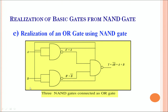When A is 1 and B is 0, we get a 0 and a 1 from the first two NAND gates so that the final output is 1, corresponding to 1 plus 0 equals 1. Similarly when A is 0 and B is 1 the output is 1, corresponding to 0 plus 1 equals 1. When both A and B are 1 the output is again 1. Thus we are able to realize the OR gate using the NAND gate.